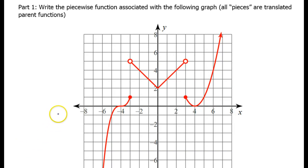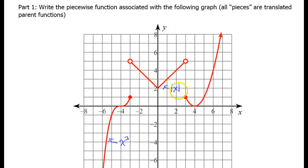In this video, I'm going to show you how to take a crazy piecewise function graph like this and write the piecewise function equation that goes with it. First of all, recognize what each one of these parent functions is. The parent function of this graph is x cubed. The parent function of this graph is the absolute value of x. And the parent function of this graph is going to be x squared because this is a parabola. So these are the parent functions. Now all we have to do is consider what the transformations are, so let's take each one of these one at a time.